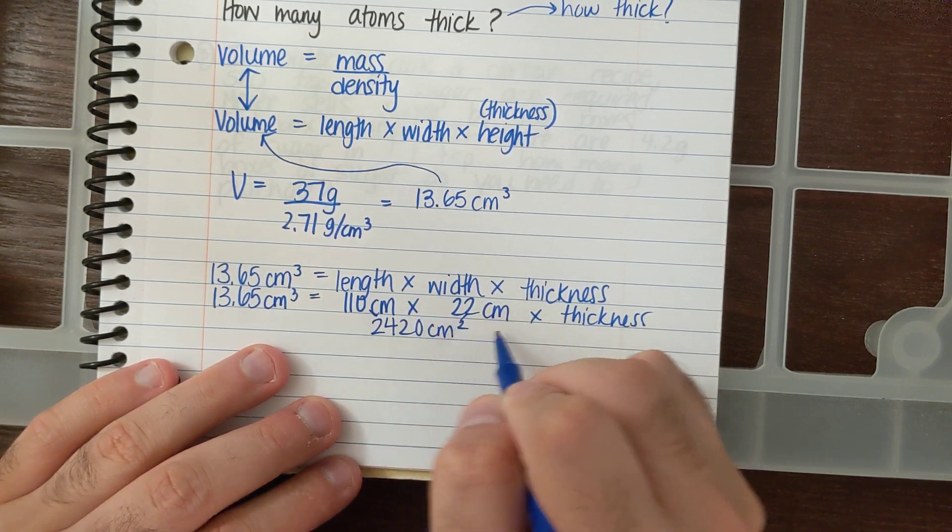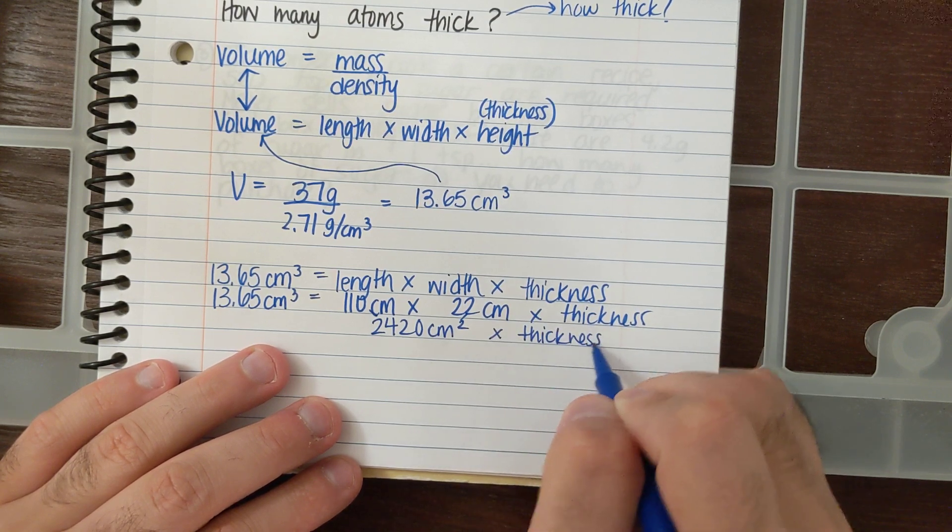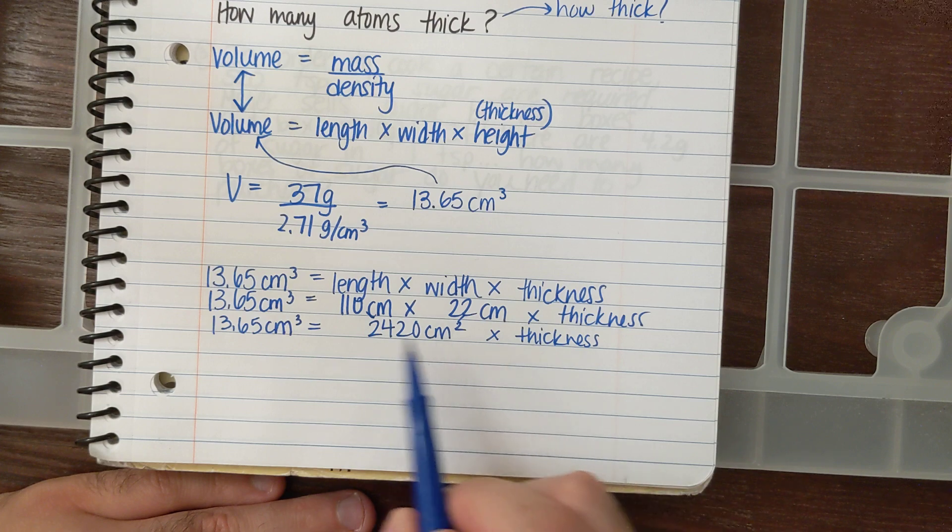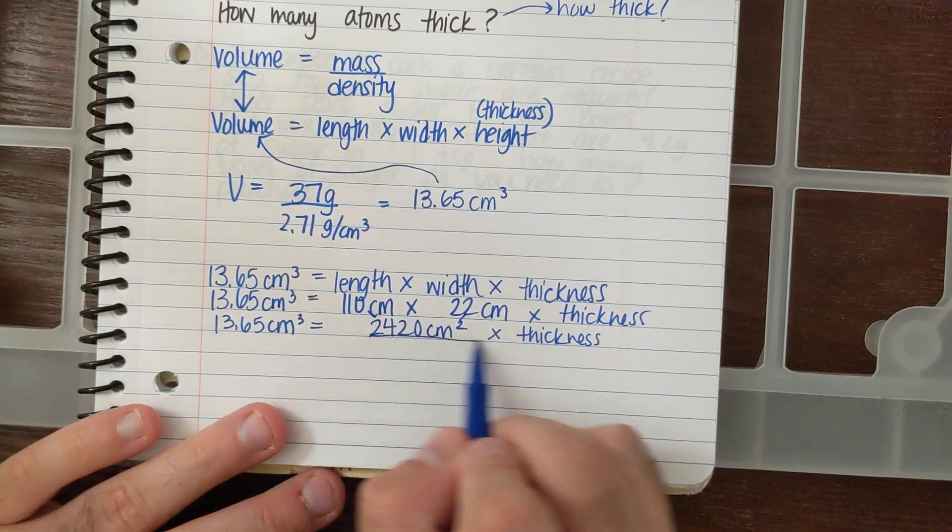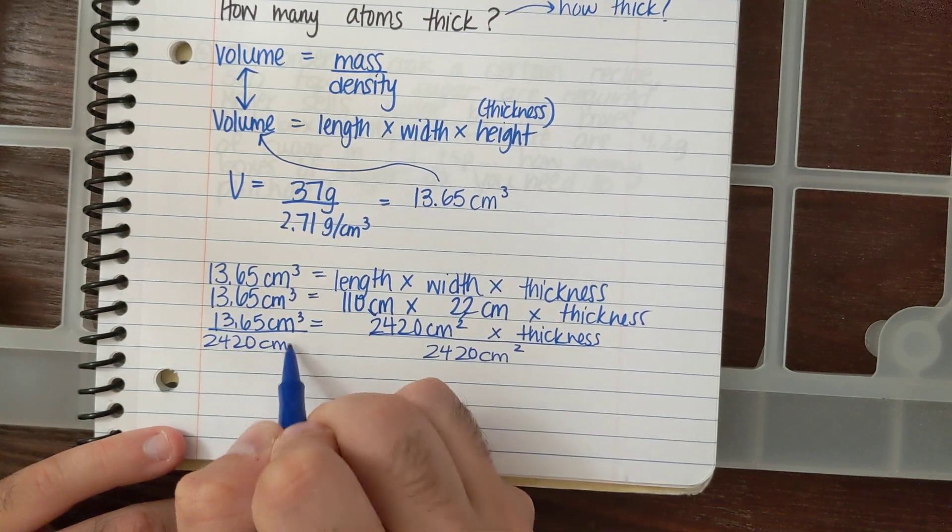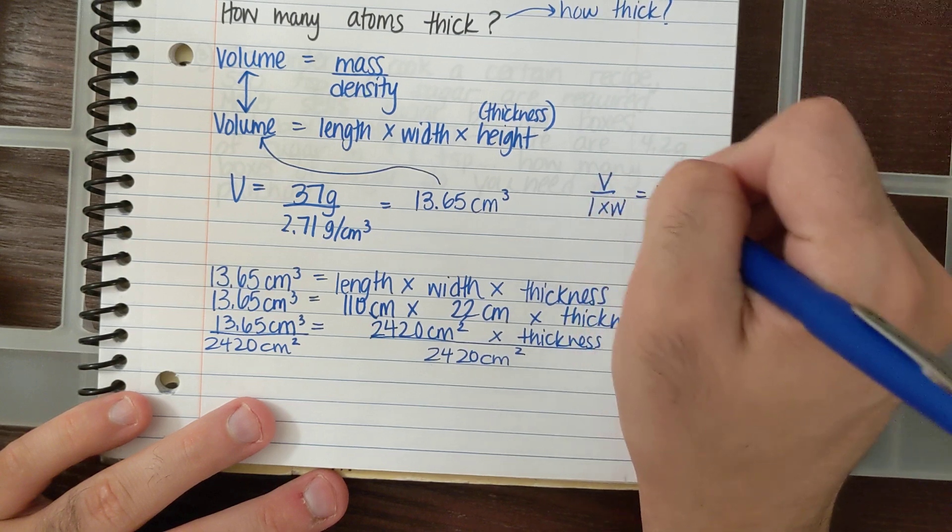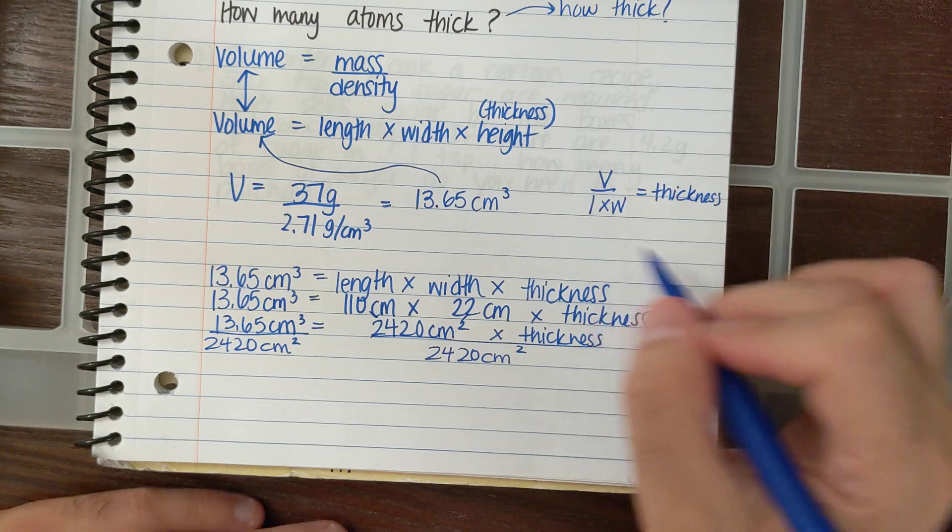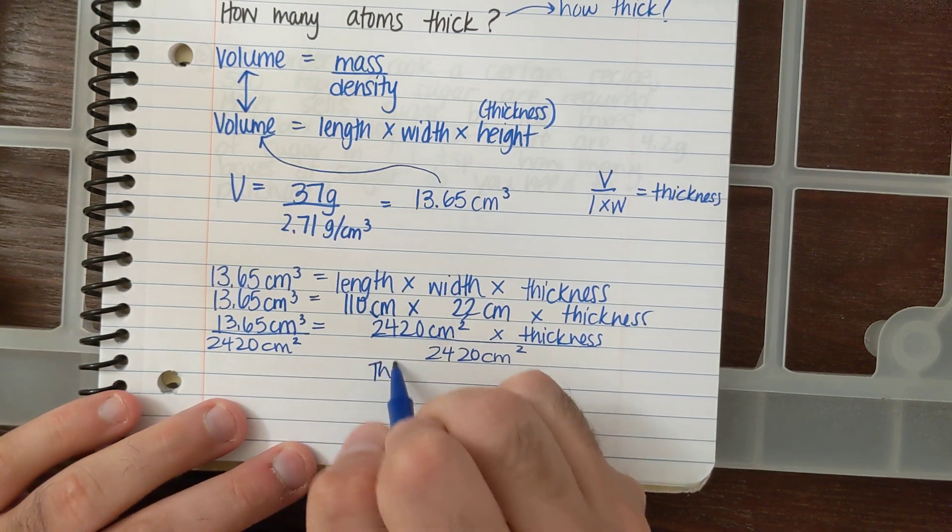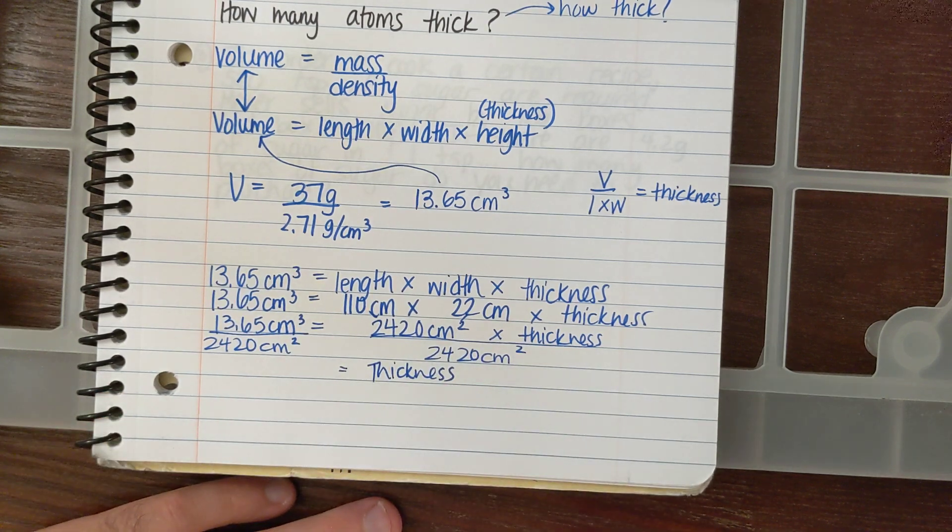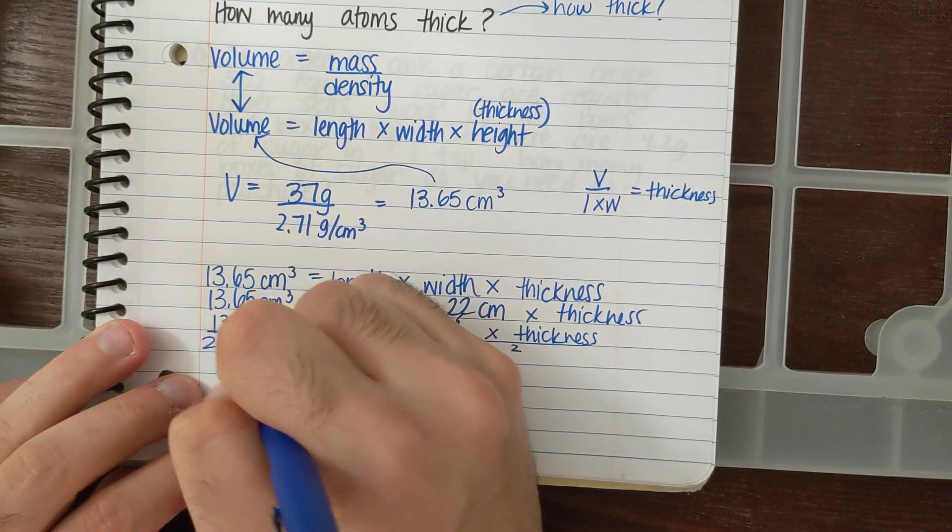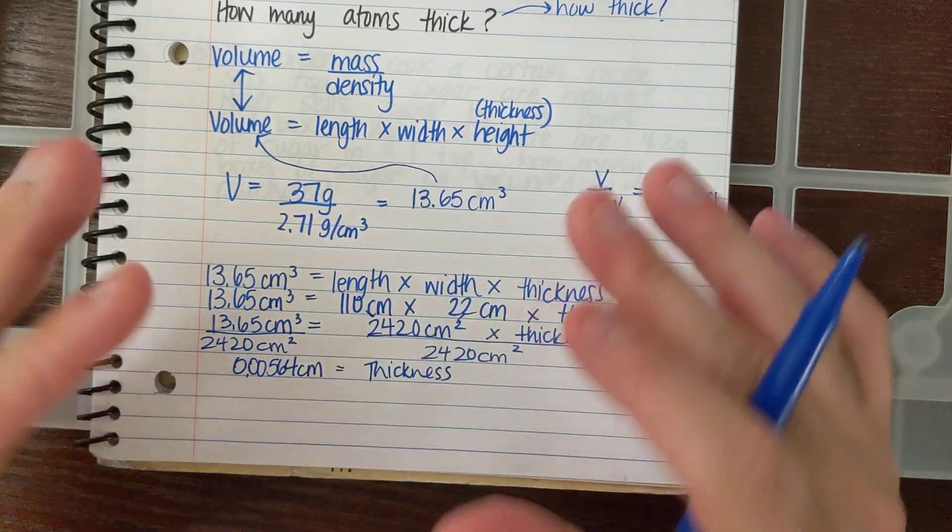Centimeters times centimeters is centimeters squared times thickness. So I'm going to divide both sides by 2420 centimeters squared. Or I could say volume over length times width is equal to thickness. Volume over length times width was 2420. And I get a thickness that's equal to 13.65 divided by 2420. I get a thickness of 0.00564 centimeters. That's how thick the foil is.